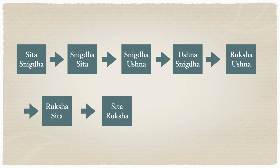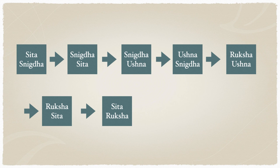When snigtha disappears it converts to ruksha — still ushna is present. As snigtha goes away, rukshata increases and ushna will also reduce, because ushna always requires fuel to burn. When there is no snigtha, there is no ushna left. It becomes ruksha-ushna, then sheeta-ruksha — it becomes cold — and finally sheeta becomes most prominent. That is what we call death. So sheeta and snigtha is health, and sheeta and ruksha is death.